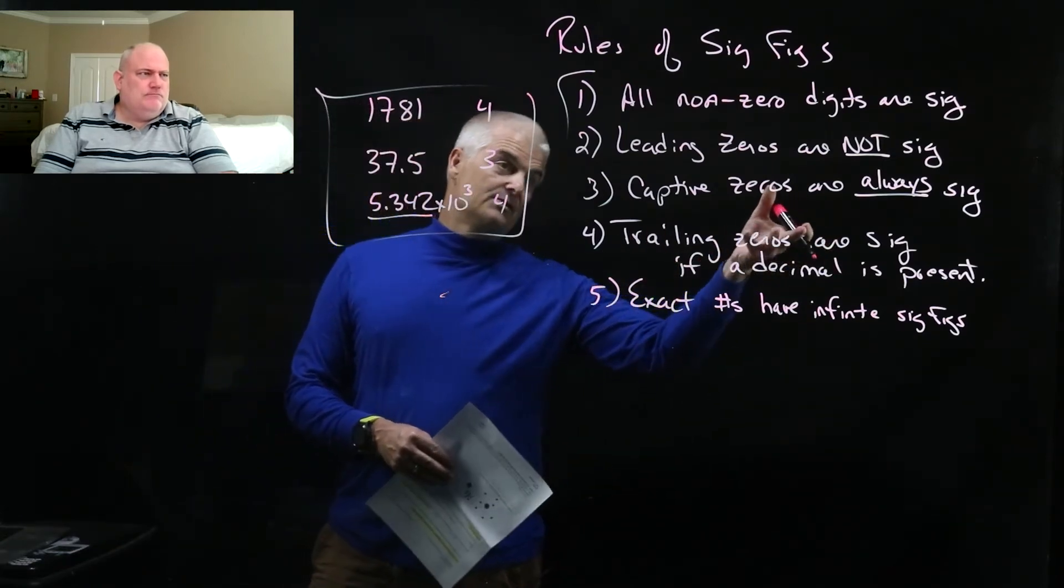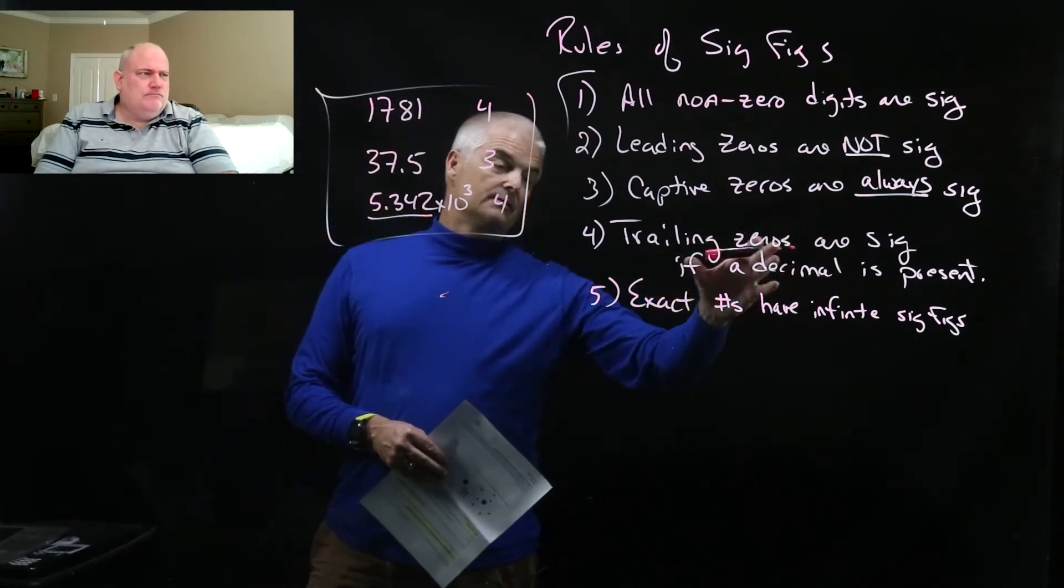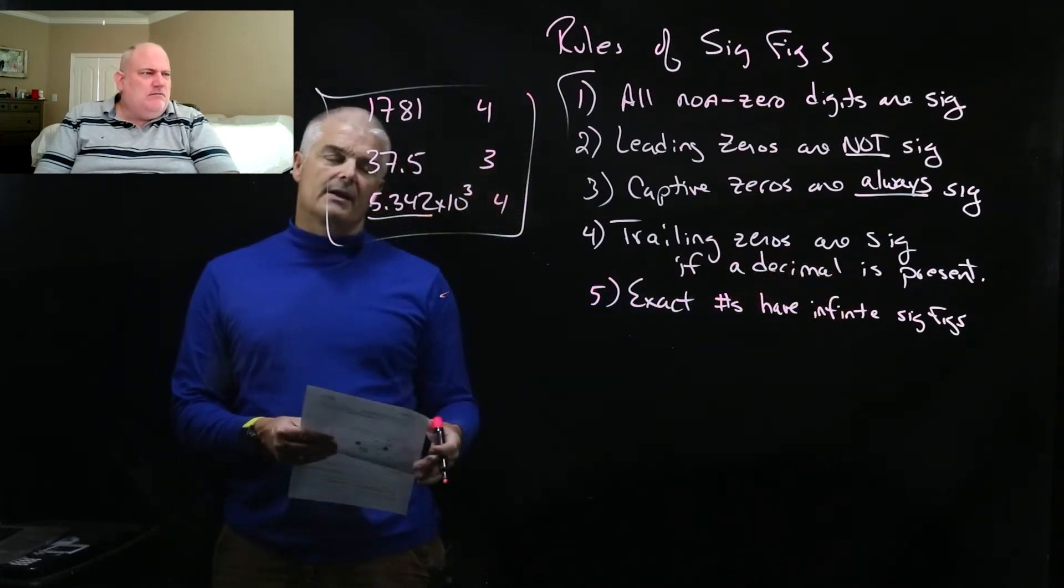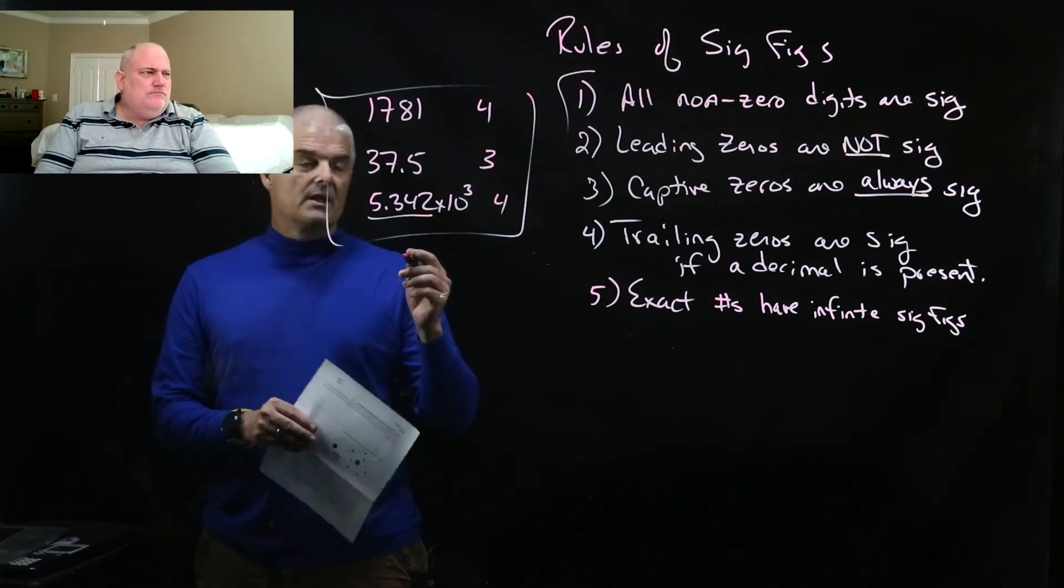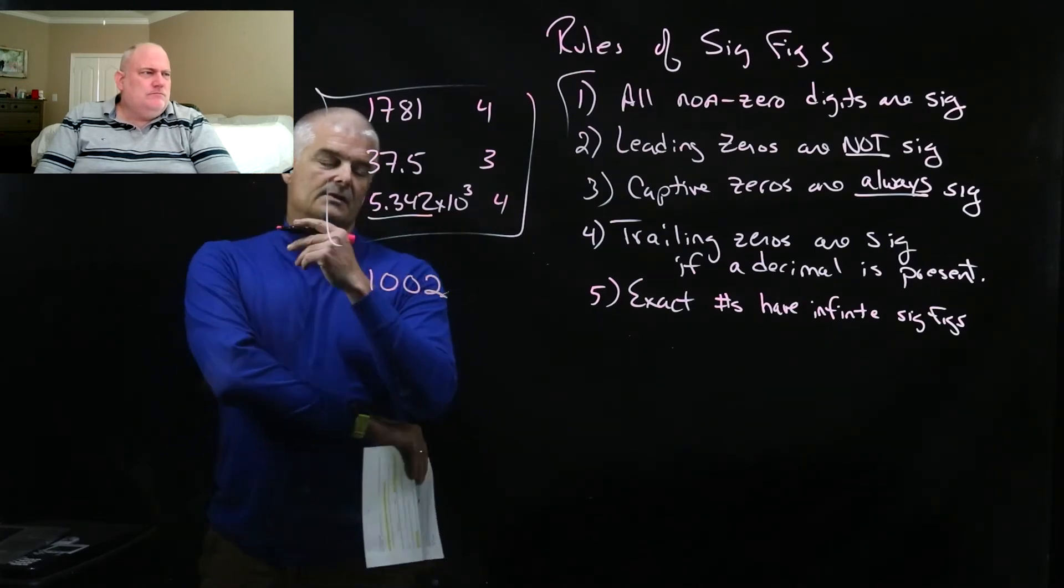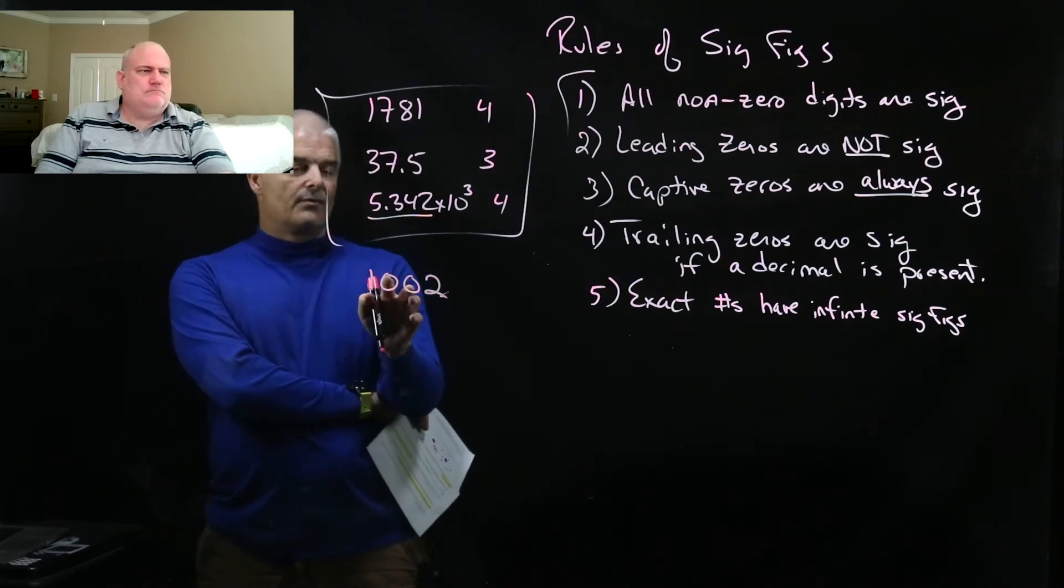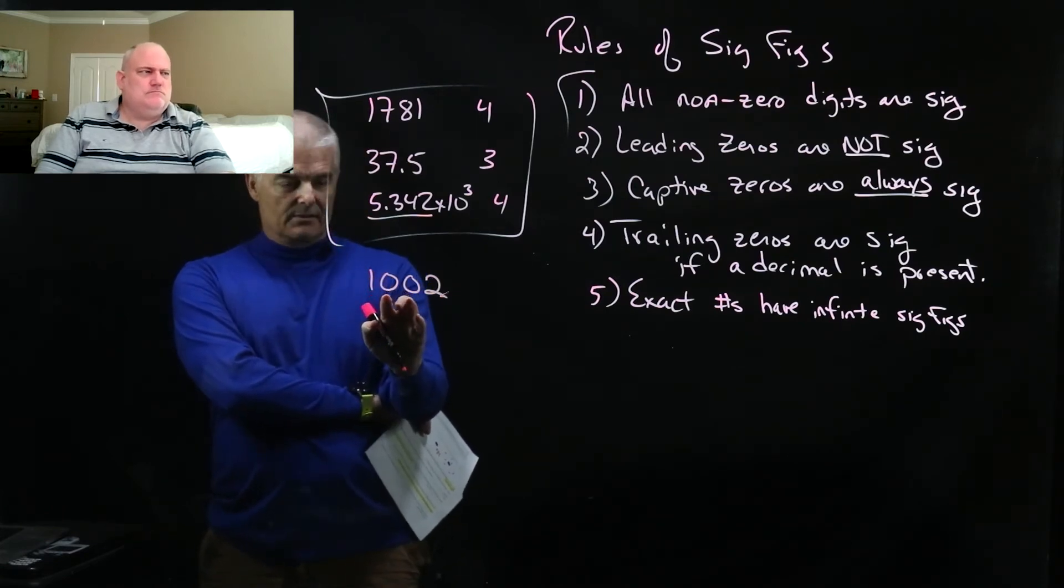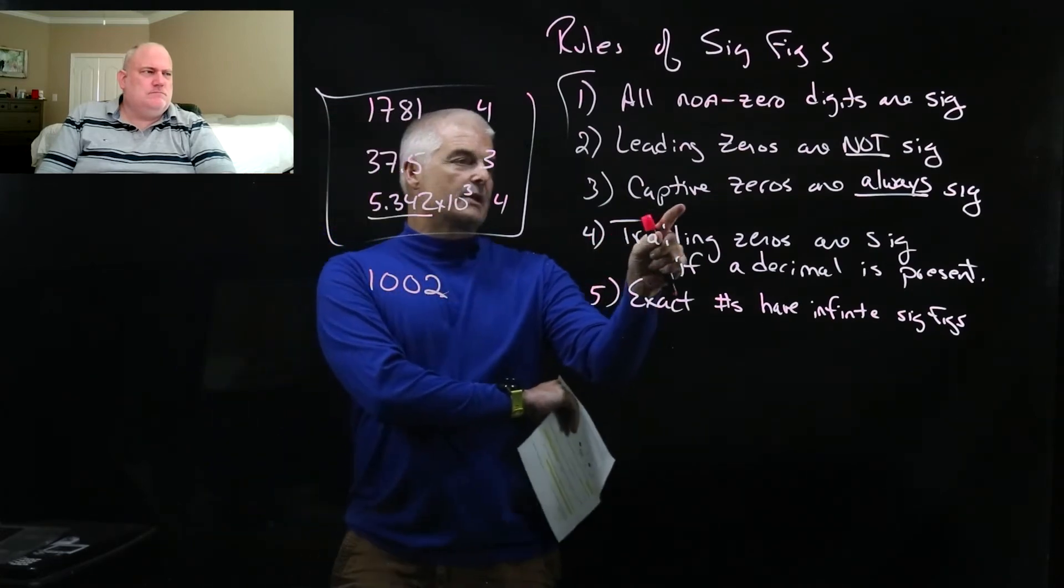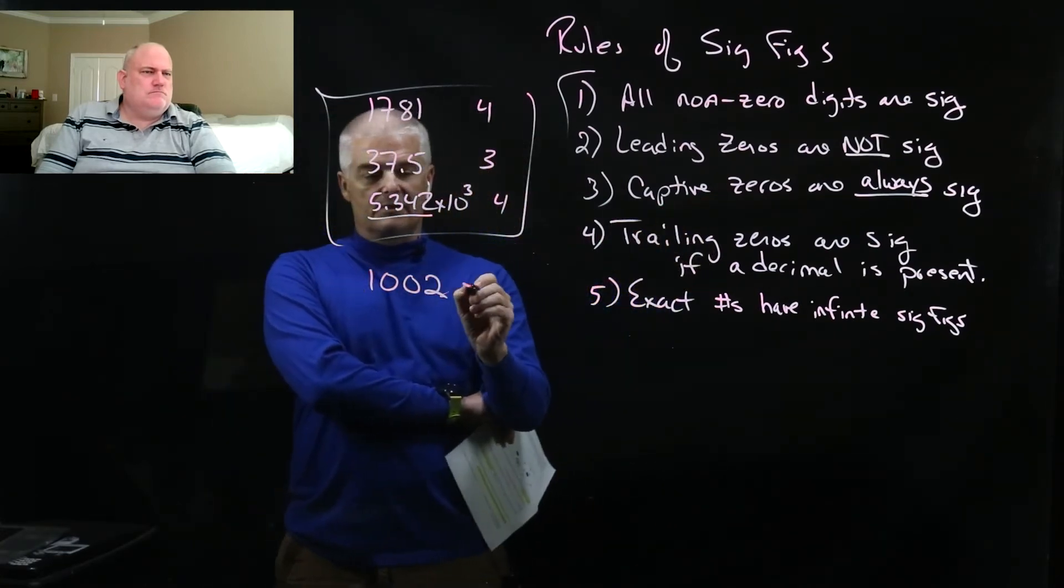Well, actually no, because if there is a decimal, yeah, well, a decimal does matter. It doesn't matter. So let's talk about something different like 1002. Now here's what we have. We call these captive zeros. See how these zeros are caught between the one and the two? And what's the rule in the captive zero rule? Number three, they're always significant. So that's four.